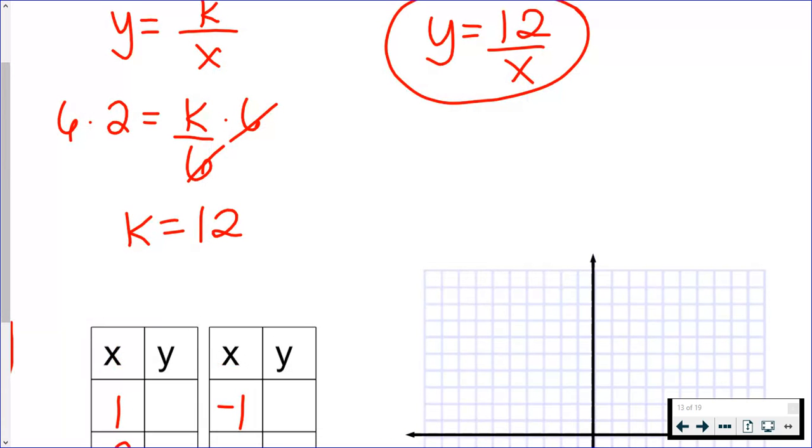So you're plugging those in to 12 over x. So for instance, if you plug in x equals 1, you're doing 12 over 1. If you're plugging in x equals negative 6, you're doing 12 over negative 6, and those will go in the y columns. So I highly suggest you pause the video so that you can fill in those charts on your own.